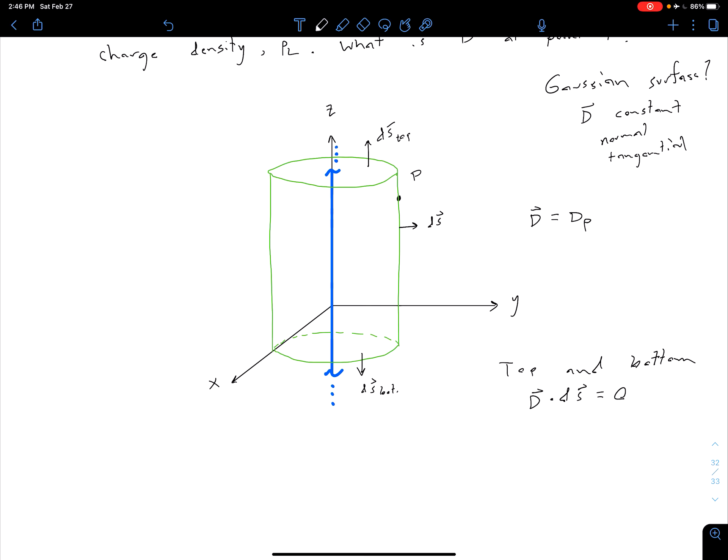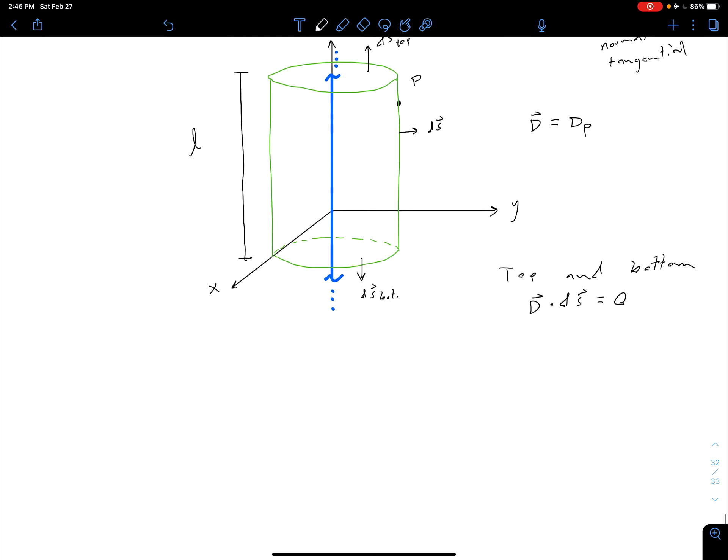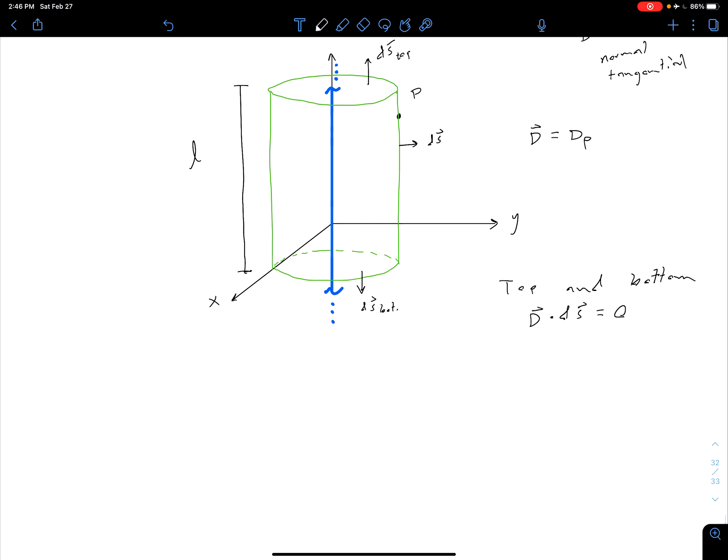So now let's say that this cylinder is enclosing some arbitrary length. So let's say from the top to the bottom of our cylinder is some arbitrary length l. And so what we can do then is we can go ahead and set up our integral, because we needed to know l to figure out the total charge enclosed. So, of course, our total charge enclosed q is going to be equal to our charge density, rho l, times the length of that infinite charge that is enclosed. So we have rho l times l as our charge enclosed.